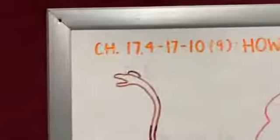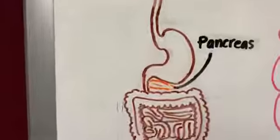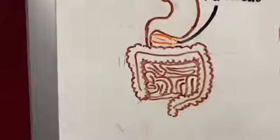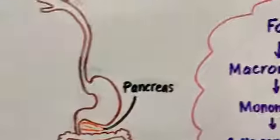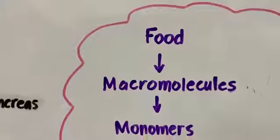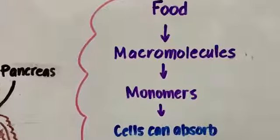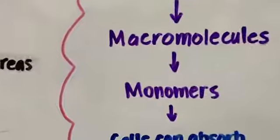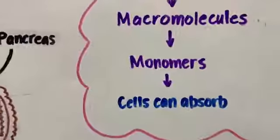The major source of digestive secretion is the pancreas, a large gland that produces both digestive enzymes and hormones into the small intestine to complete chemical digestion of food. The digestive system takes food and breaks it down into smaller substances called macromolecules, and we want to eventually break these macromolecules into smaller units called monomers so cells can absorb them.